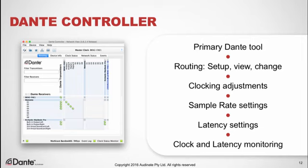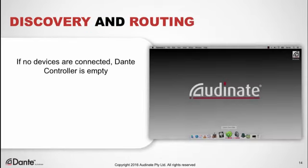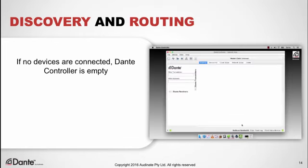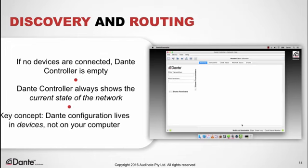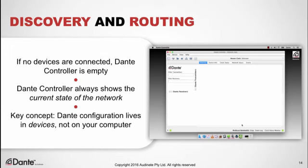You can also monitor system health by observing actual latency behavior and clock quality. When Dante Controller is launched with no devices connected, it appears empty, because Dante Controller always shows the current state of the network regardless of history. The state of a Dante network — the subscriptions, labels, and settings — all reside on the Dante devices themselves, meaning all copies of Dante Controller on a network will see the exact same thing.